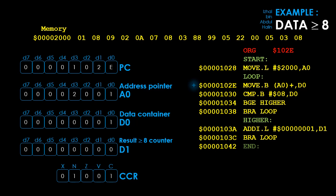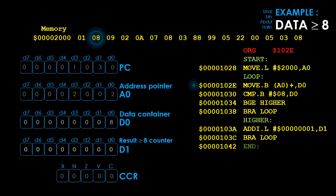The program counter is now pointing to address 102E. Before executing the instruction, the program counter is updated to point to the next instruction's address. The instruction MOVB (A0)+, D0 is executed. Since A0 is now pointing to address 2001, the corresponding data with a value of 8 is copied into register D0. The status register is updated to 00000. Next, the address register is incremented by 1.